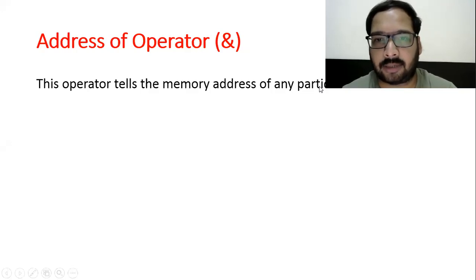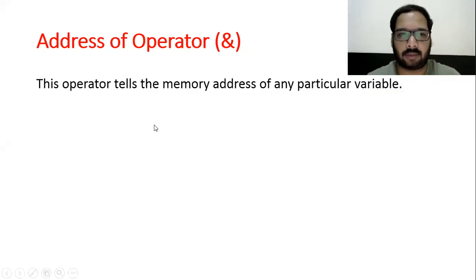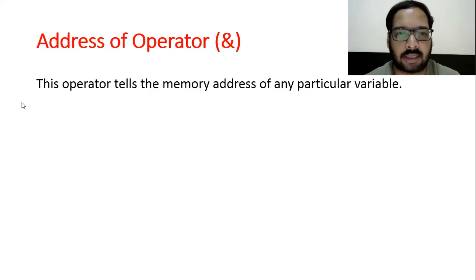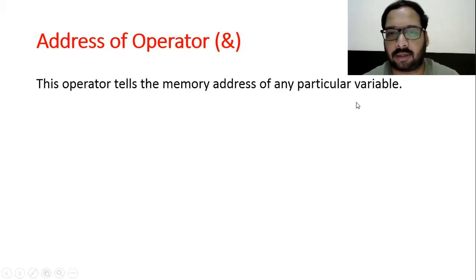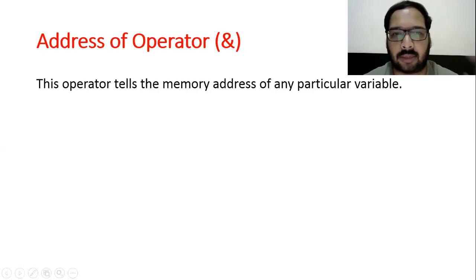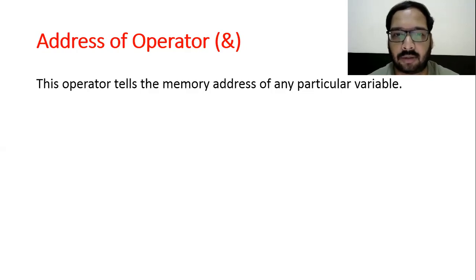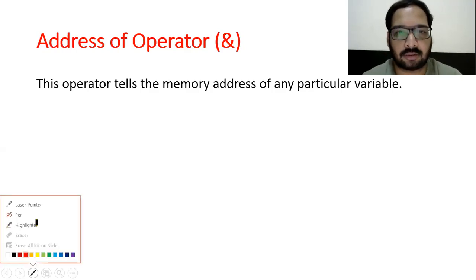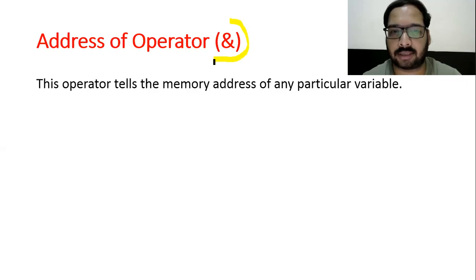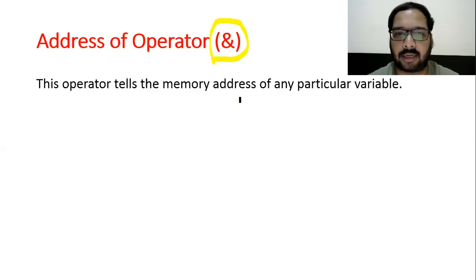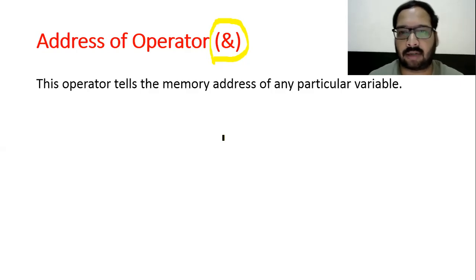We will talk to the point here. For example, if you are asked what is the address of operator, you should know that this operator tells the memory address of any particular variable. Now if you are asked where we can use it, you have seen that whenever we use a variable inside scanf, we put the & sign before it, which is called the address of operator.